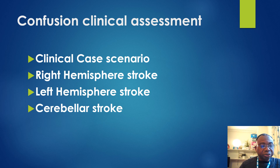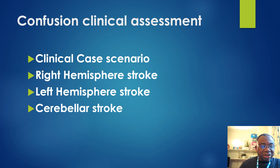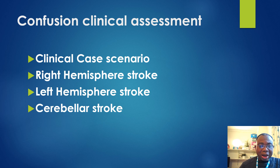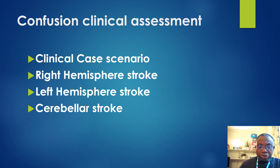Right hemisphere stroke is one which involves the right hemisphere of the brain, which controls the left side motor function and analytical and perceptual tasks such as judging distance, size, speed, or position, and seeing how parts are connected into a whole. Survivors of right hemisphere stroke, along with left-side paralysis, may also have problems with their spatial and perceptual abilities. This may cause them to misjudge distances, leading to a fall, or be unable to guide their hands to pick up an object.